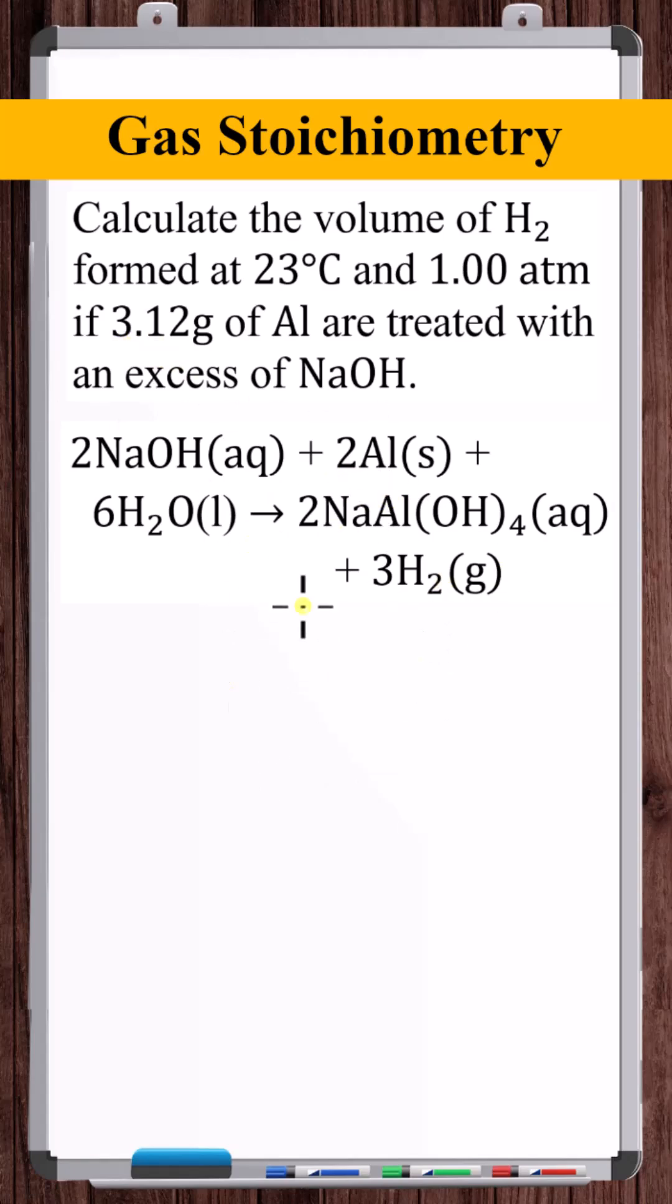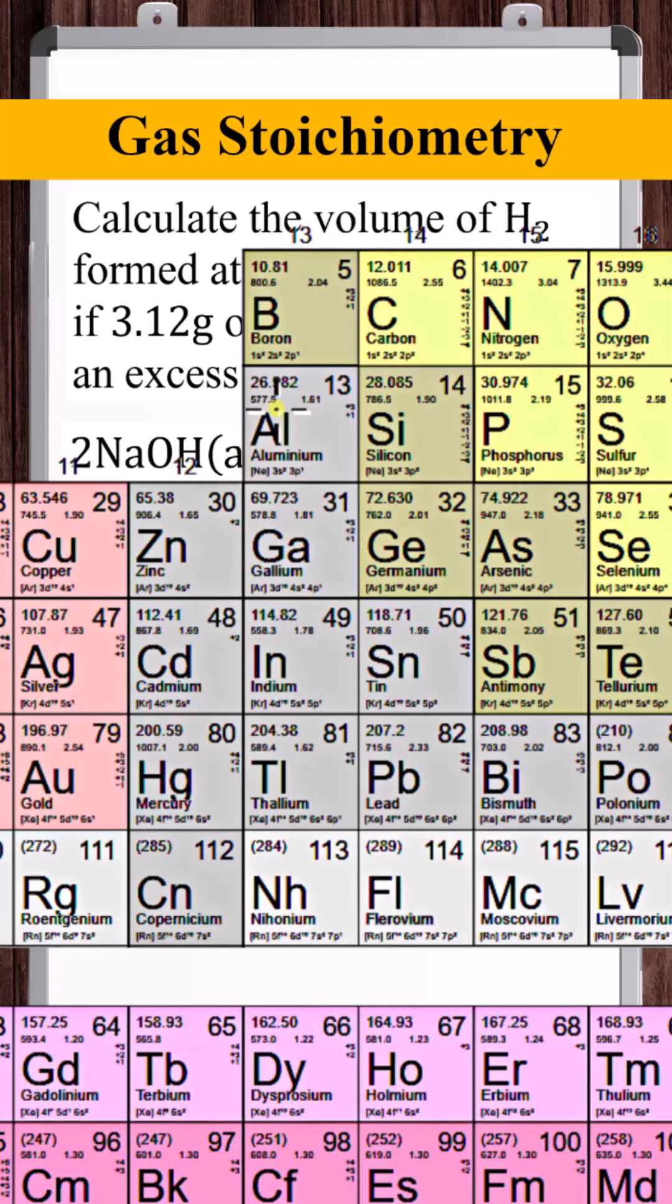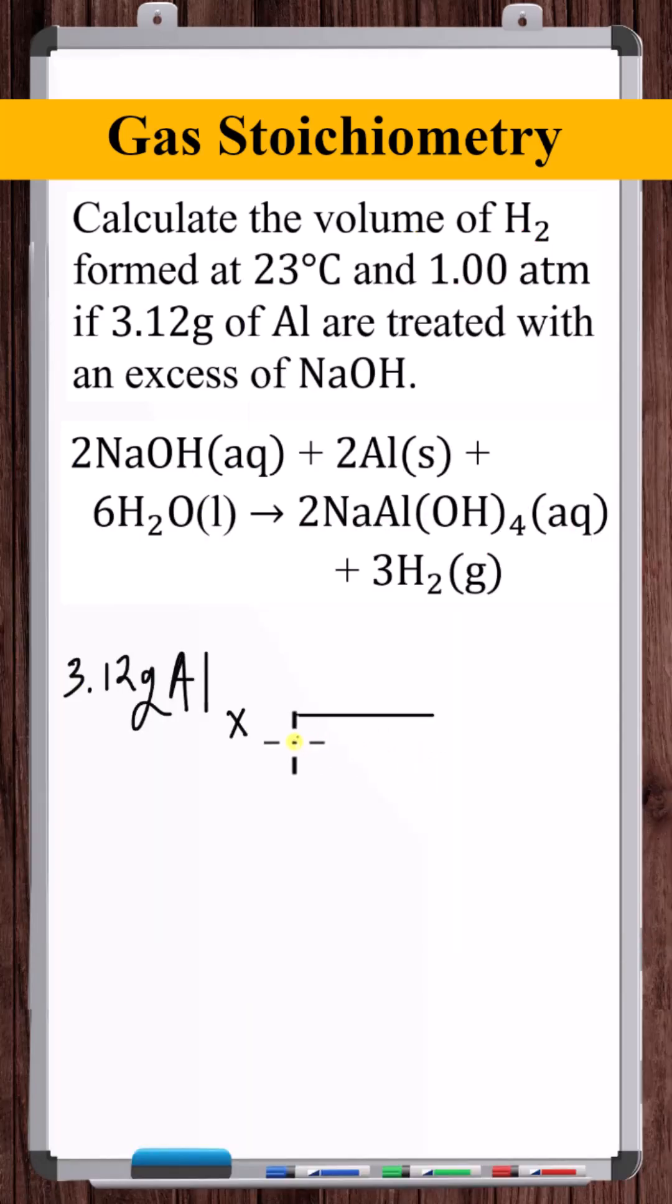This equation is already balanced. If we're starting with 3.12 grams of aluminum, convert this to moles. Molar mass of aluminum is 26.982, so there's 26.982 grams of aluminum for every one mole of aluminum.